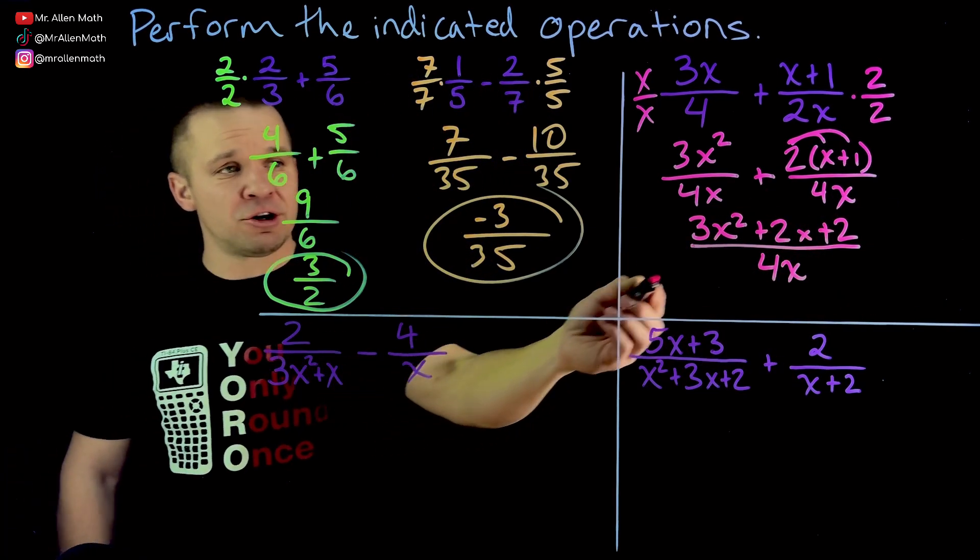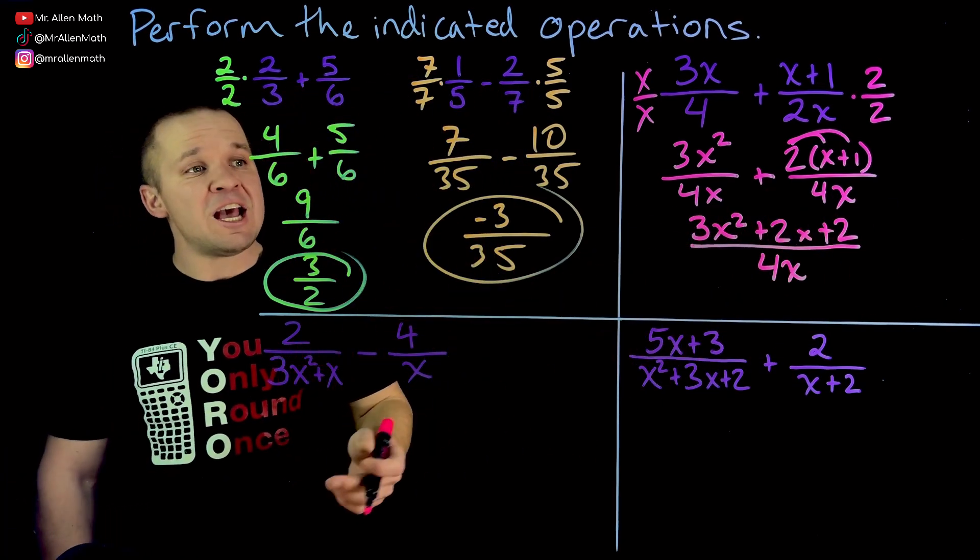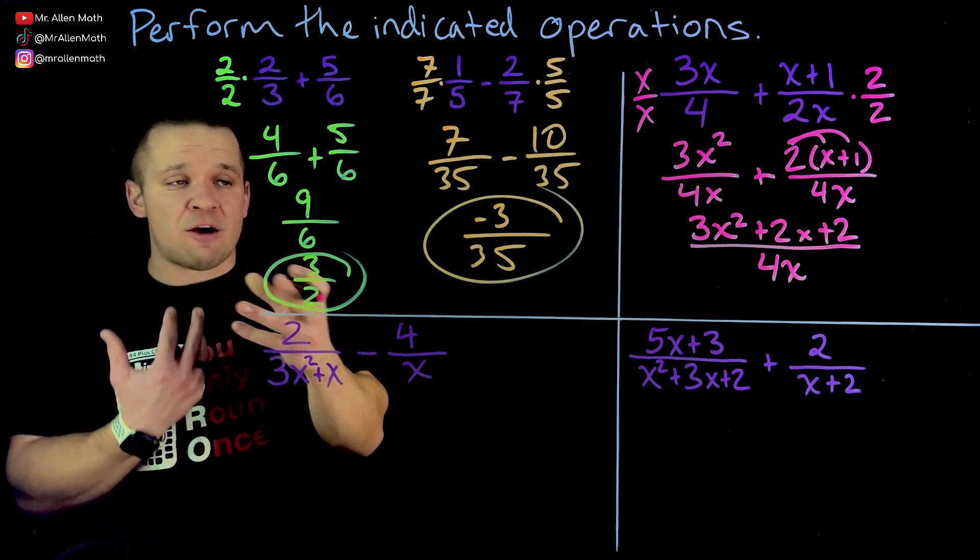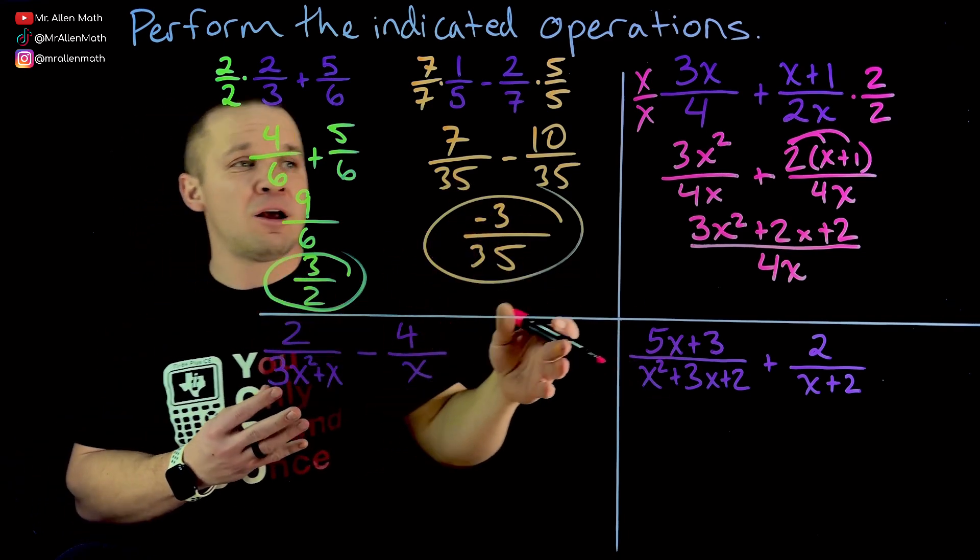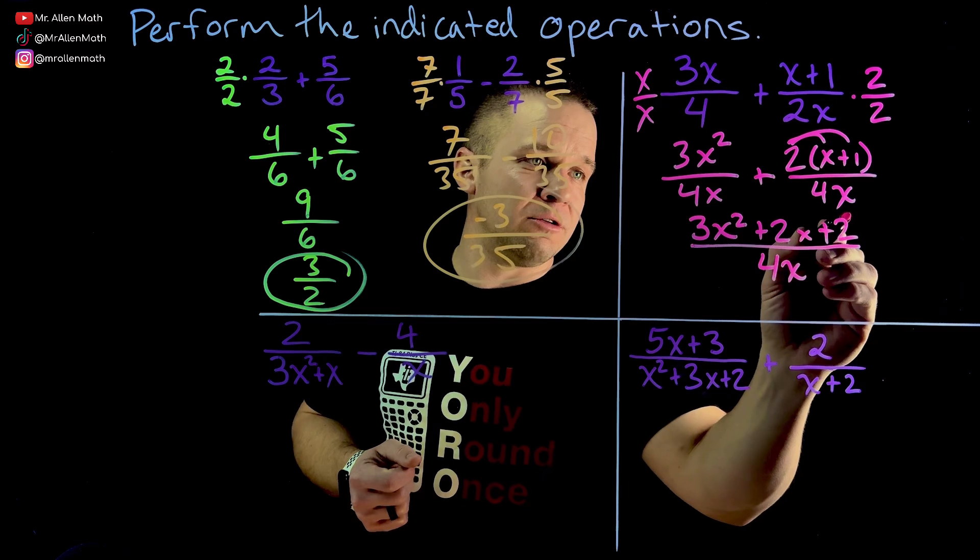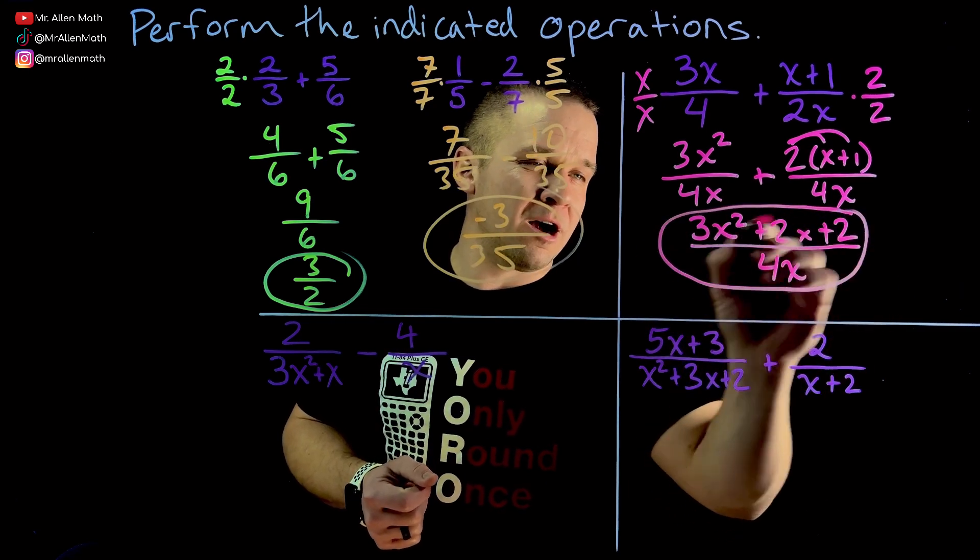And now I have three X squared. I'm going to write it as one fraction here. Three X squared plus two X plus two all over four X because they're the same denominator. All right. Now, if I can combine like terms up here in the numerator, I'll do that. If I could possibly take out a GCF or anything like that and reduce, I would do that. But there's nothing here that I can do with this one. Boom. We are done.